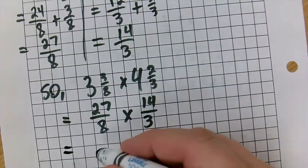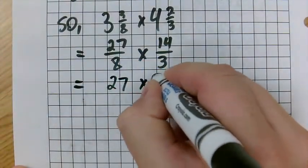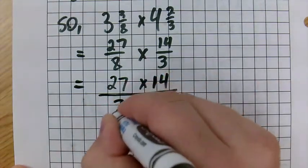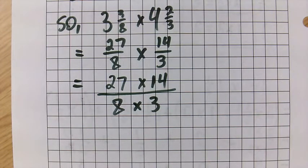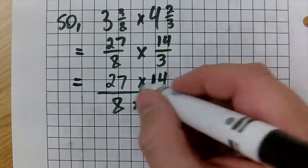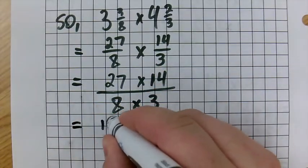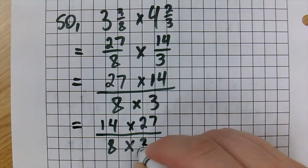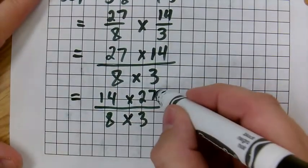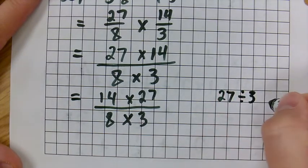We can write this as 27 times 14 divided by 8 times 3. Now, I'm going to show you something cool here. This might take a little bit longer to multiply it out. So, here's another idea. We have some common factors here amongst here. I'm just going to switch the order of these. I'm going to write 14 times 27 over 8 times 3. Why? Because I've noticed something. 27 and 3 both have some common factors, right? 27 can divide by 3 and become 9. 3 can divide by 3 and become 1.